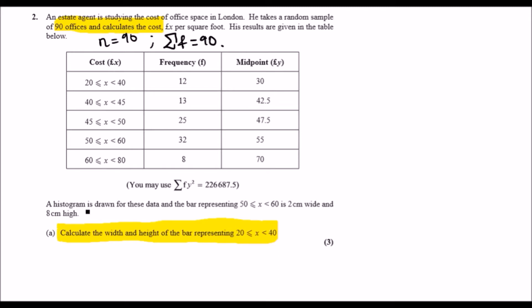Now, a histogram is drawn for this data and the bar representing 50 to 60 is 2 cm wide and 8 cm high. Calculate the width and height of the bar representing 20 to 40.